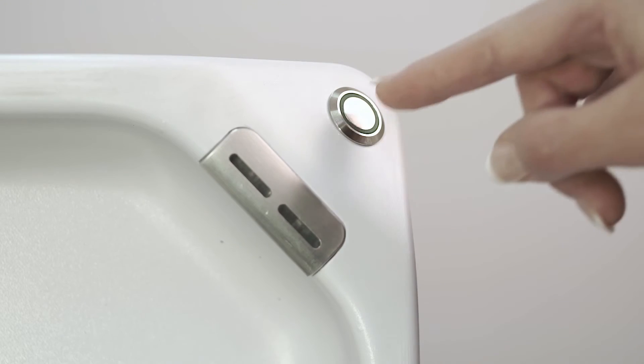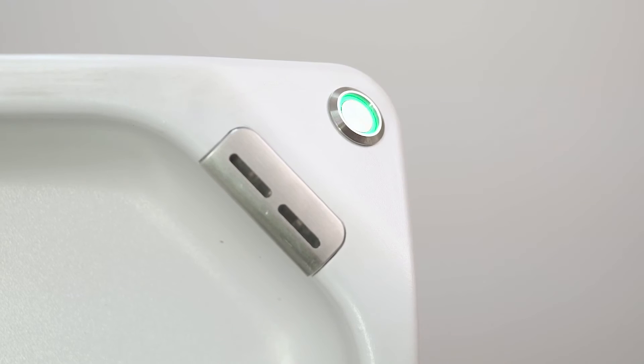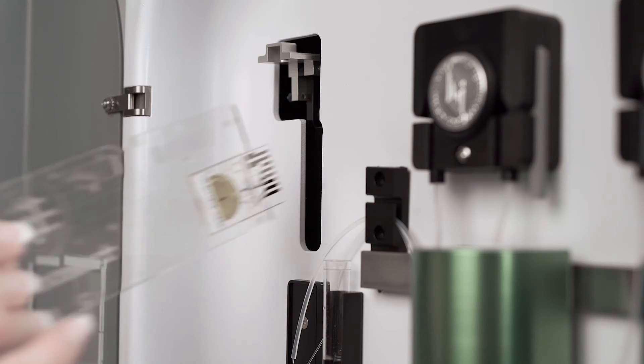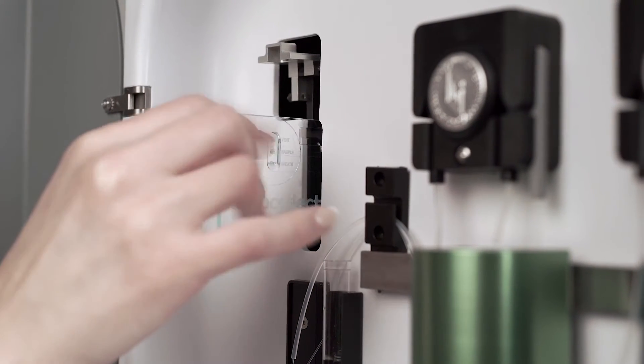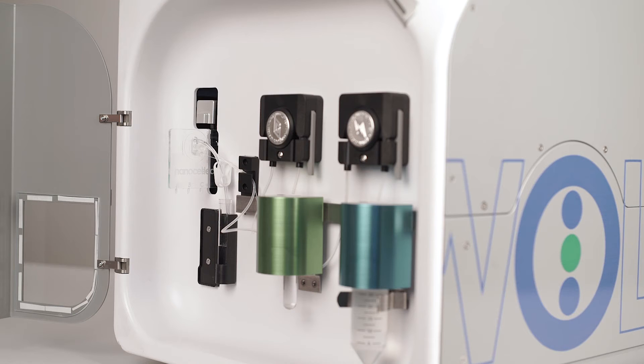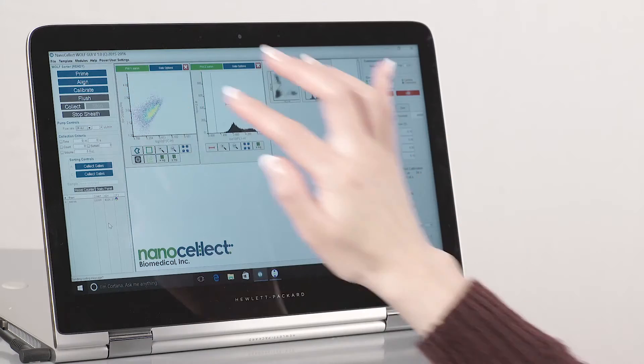The steps to get going and actually sort your cells is very easy and takes only a few minutes. You start by plugging in the cartridge. You do a priming step which only takes a couple of minutes.